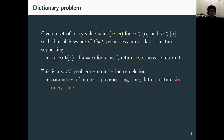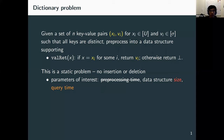For static problems, we care about three parameters: pre-processing time, data structure size, and query time. For the dictionary problem, pre-processing time is usually optimal — linear or nearly linear in the data structure size. So today I'll focus on memory usage and query time for answering value retrieval queries.